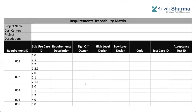We create a traceability structure. This is a traceability structure for a software project. We typically call it requirement traceability metrics. We have a project name, and each requirement has an ID — a unique specification number — so that I can say, okay, is this requirement being delivered or not? Each requirement has to have some kind of unique reference point, so we give it a requirement ID.